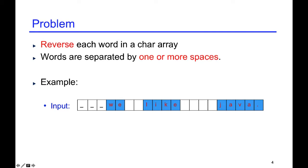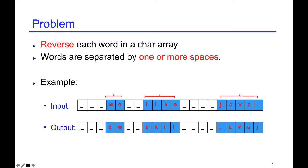For example, in this input, we have three spaces at the beginning of the array, one word, two spaces, another word, four spaces, and one more word.